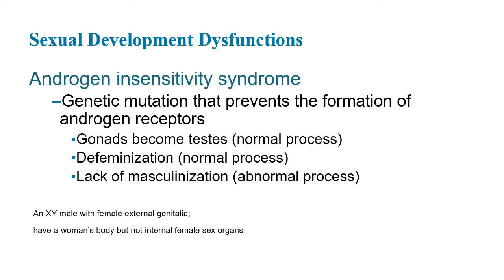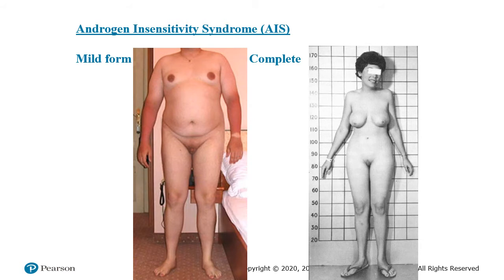There are a couple of examples. The mild form shows a body that resembles a mix of male and female biological features — the external looks somewhat female but it's not fully there. The complete form on the right looks fully female externally. However, the internal does not have female sex organs. People with androgen insensitivity syndrome tend to be sterile.